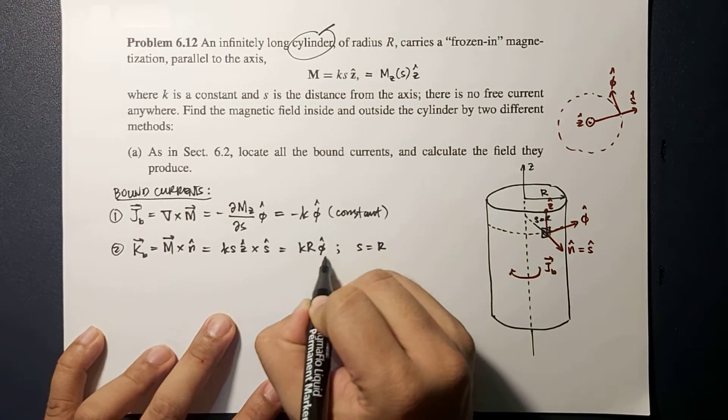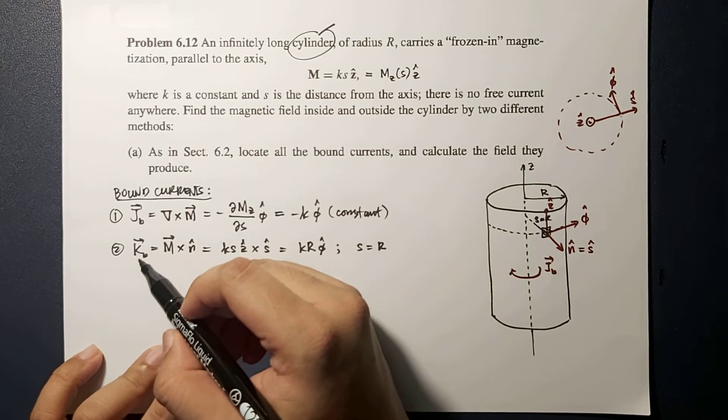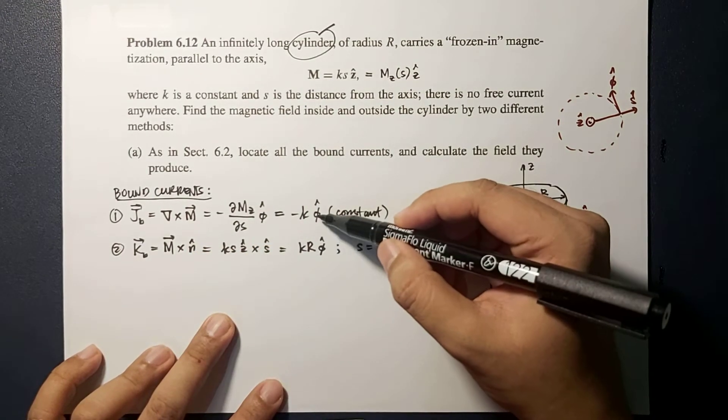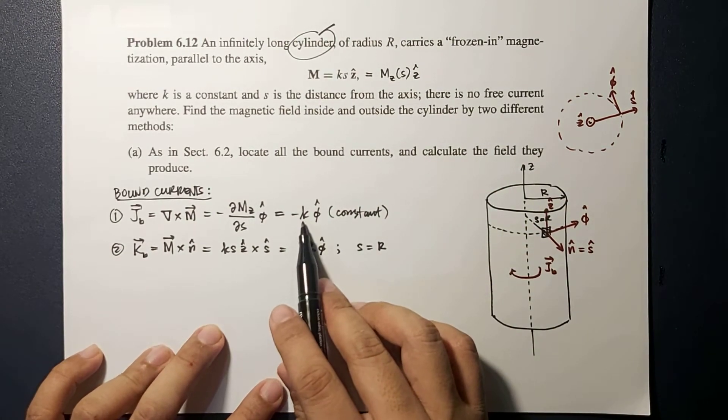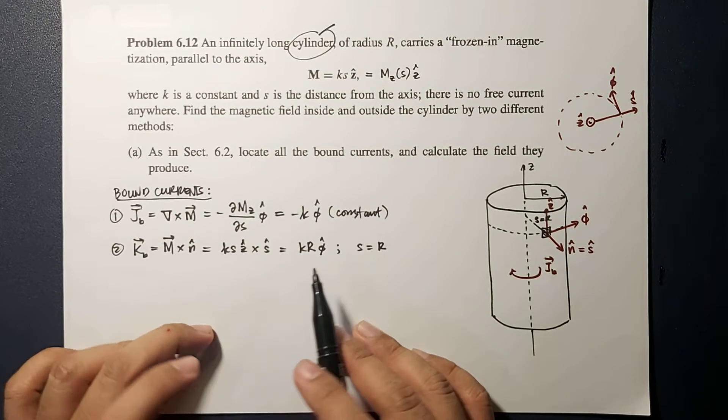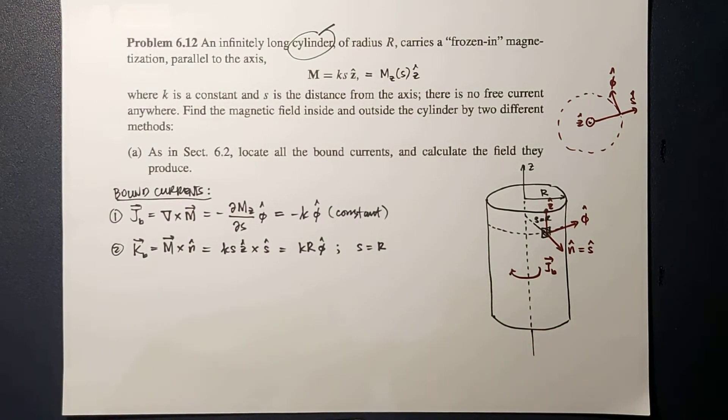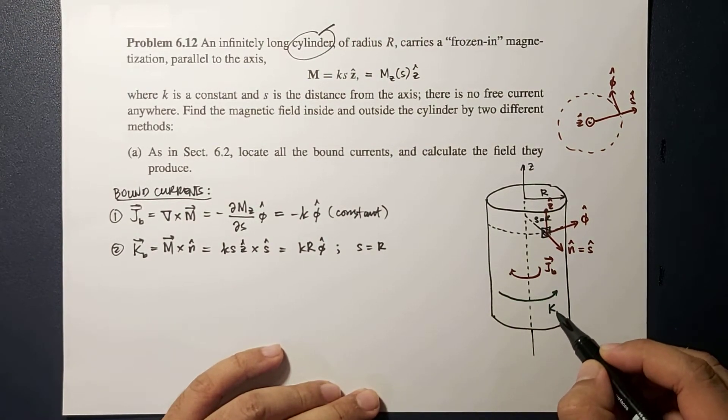As you will notice, your current density J and your current density K is along the φ direction, but one is opposite of the other. So if we're going to draw that here on the surface, K is in this direction.